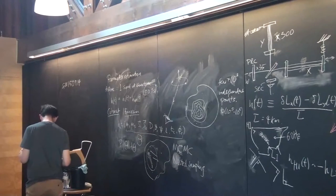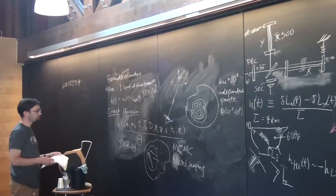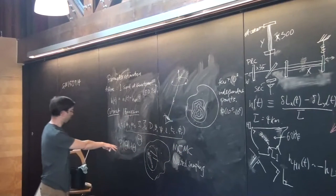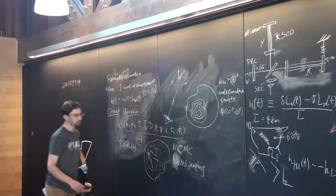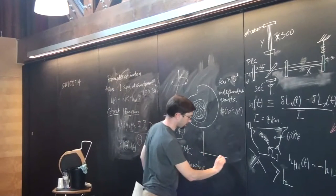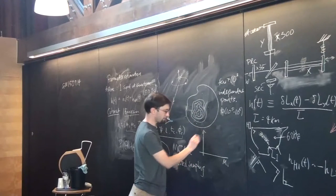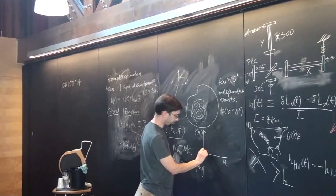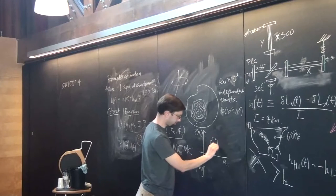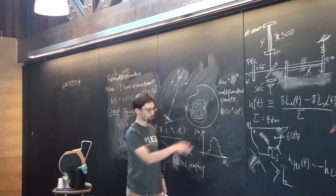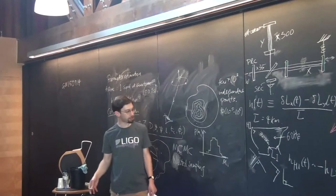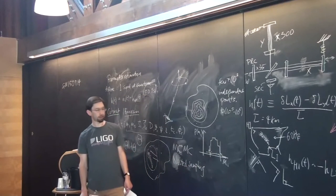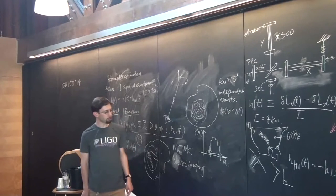Once you have the probability density over the parameter space, take for example M1: you get a distribution of samples after integrating over all other parameters. If 90% of the samples lie between two values, that gives your mass measurement with a 90% confidence interval.